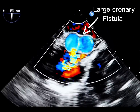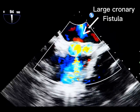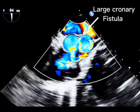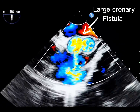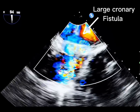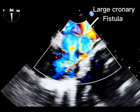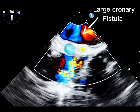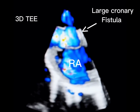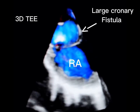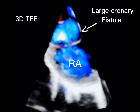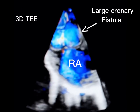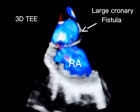Larger fistulas may lead to myocardial ischemia due to a steal phenomenon, as well as arrhythmia, endocarditis, signs of significant left-to-right shunt, and even heart failure.